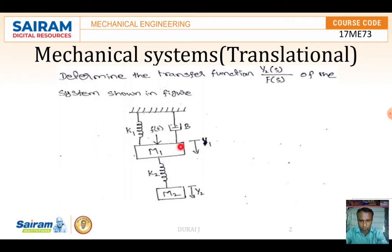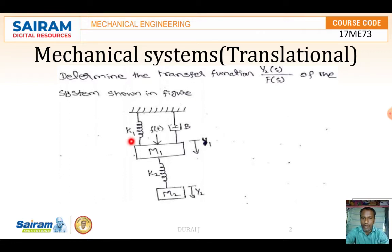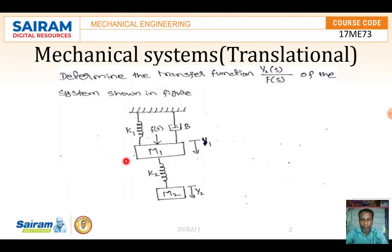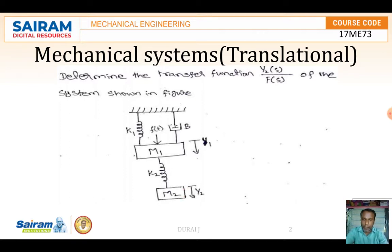In this diagram you can see there are two masses M1 and M2. Spring force K1 is connected to M1, and K2 is connected between M1 and M2. There is also a damper connected here. Due to these elements, there are two displacements: Y1 taking place in M1 and Y2 taking place in M2.